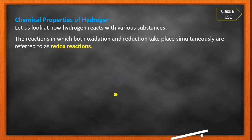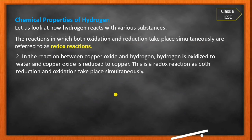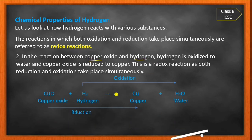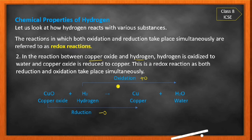Another example of a redox reaction: copper oxide reacts with hydrogen. Hydrogen produces water (addition of oxygen — oxidation), and copper oxide is converted to copper (oxygen removed — reduction). Since oxidation and reduction take place simultaneously in the same reaction, these reactions are called redox reactions.